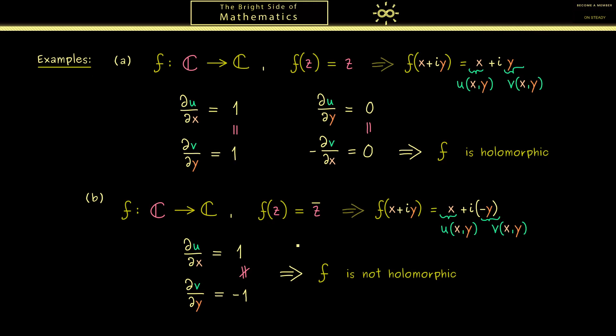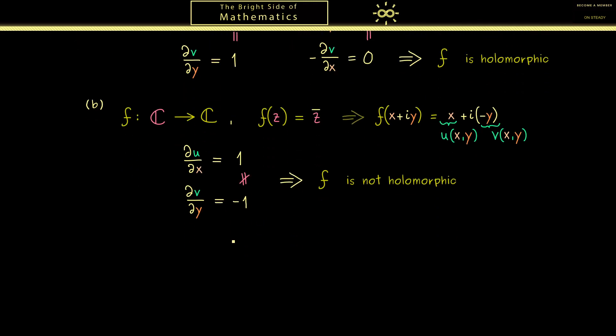However maybe we should also look at a more complicated example. So let's take another complex function f. And now I want to look at it as z² plus iz. To be honest you already know that this is a holomorphic function. Because it's a complex polynomial. Indeed we already know how to calculate the complex derivative for such a complex polynomial. Here it should be 2z plus i. Still it's very helpful to check it with the Cauchy-Riemann equations.